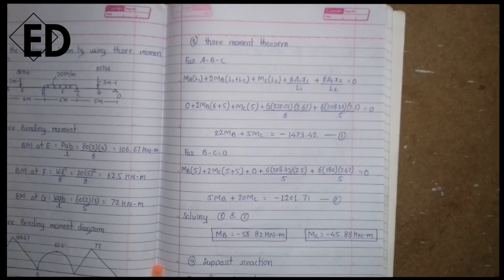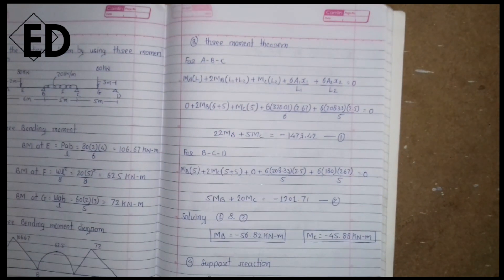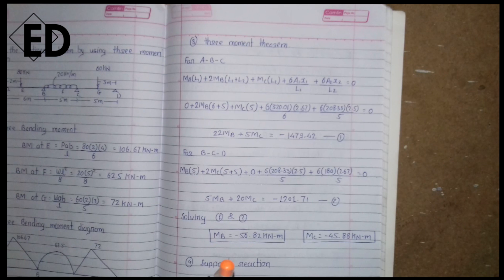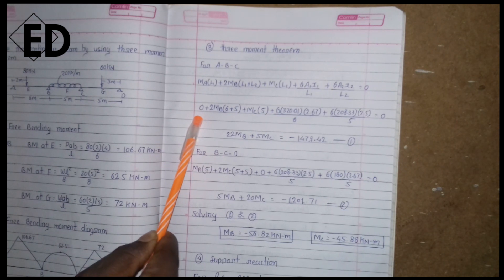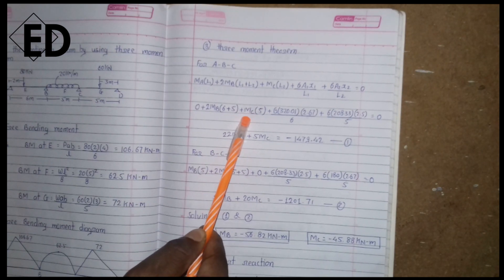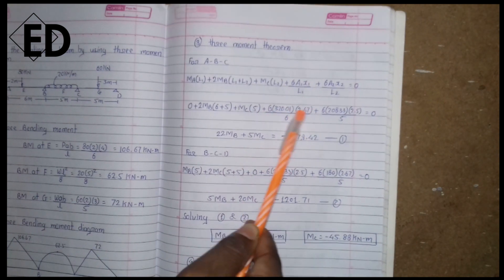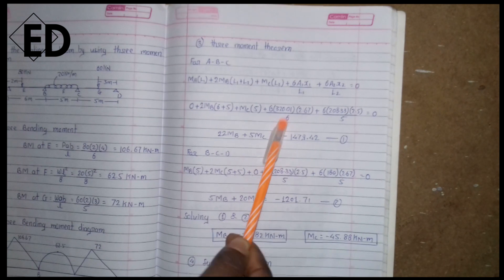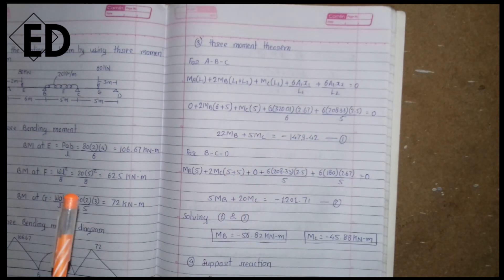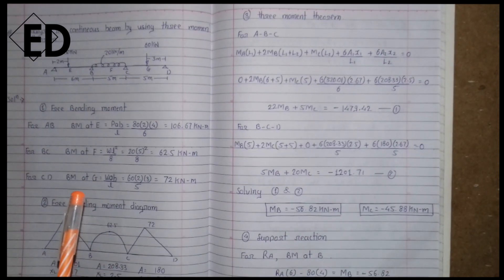The third step is to calculate the bending moments using the three-moment theorem. For span ABC: support A is a roller, so the bending moment at A is 0. The equation becomes: 0 + 2·M_B·(L1 + L2) + M_C·L2 = −6A1·x1/L1 − 6A2·x2/L2. The values are taken from the calculated areas and centroids.